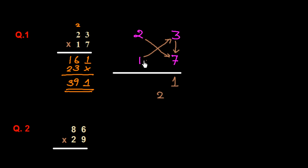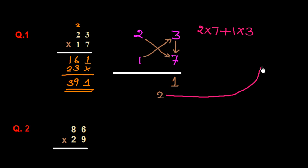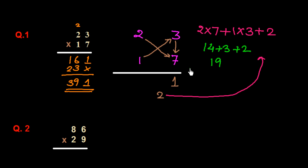We multiply 2 into 7 and 1 into 3 and add them up. So we write 2 into 7 plus 1 into 3, and we add the carried 2. So we get 14 plus 3 plus 2. 14 plus 3 is 17, plus 2 is 19. We get 9 in this position and write down 9, carrying 1.